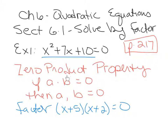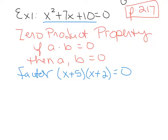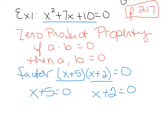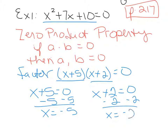Now we have two things being multiplied together to equal 0. That's the whole point of factoring — getting two things that multiply together to equal 0. If this times this equals 0, then either this is 0, or this is 0, or they're both 0. Once you have factored, set each factor equal to 0: x plus 5 equals 0 gives x equals negative 5, and x plus 2 equals 0 gives x equals negative 2. These are both valid solutions for this quadratic equation.